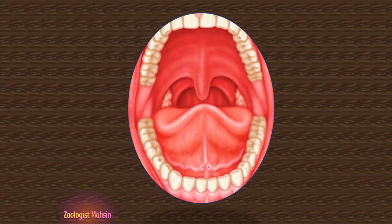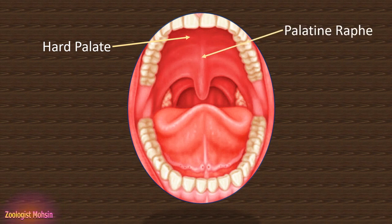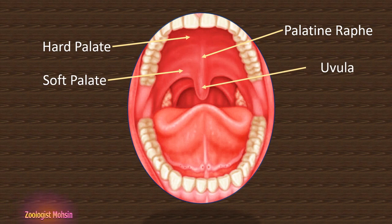Here is the diagram of the oral cavity of humans. We shall label some structures to learn about them. The first structure is the hard palate — you can feel the hard palate in your mouth by touching it with your finger. The midline ridge present on the upper side of the palate is called the palatine raphe, and behind it there is a soft palate, which you can feel is soft with your finger. The structure hanging behind the mouth is called the uvula.